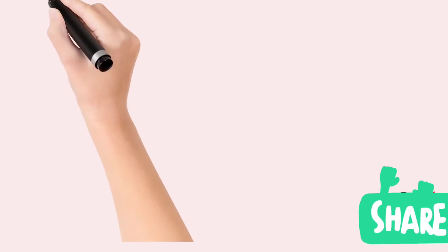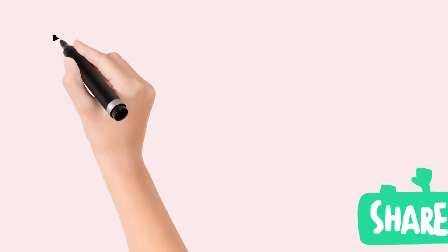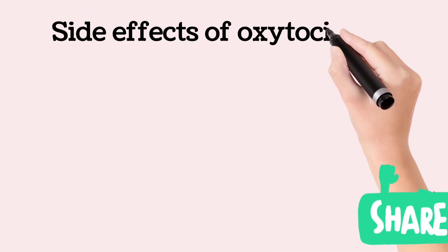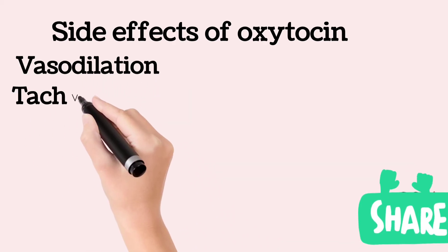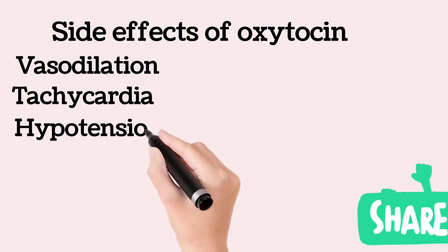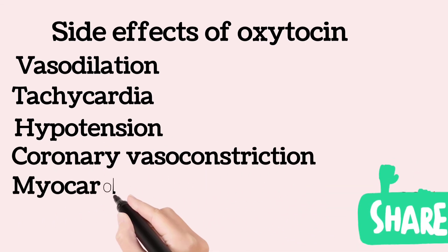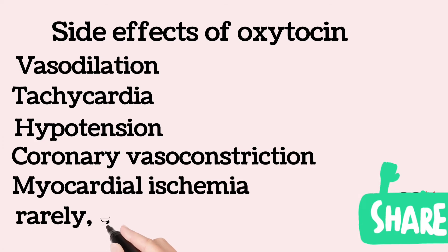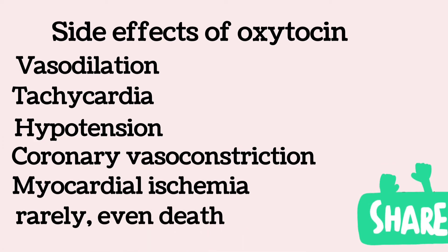Endogenous oxytocin is released from the posterior pituitary gland. Exogenous oxytocin can be associated with serious side effects including vasodilation, tachycardia, hypotension, coronary vasoconstriction, myocardial ischemia, and rarely even death, especially in hypovolemic or other hemodynamically compromised patients.